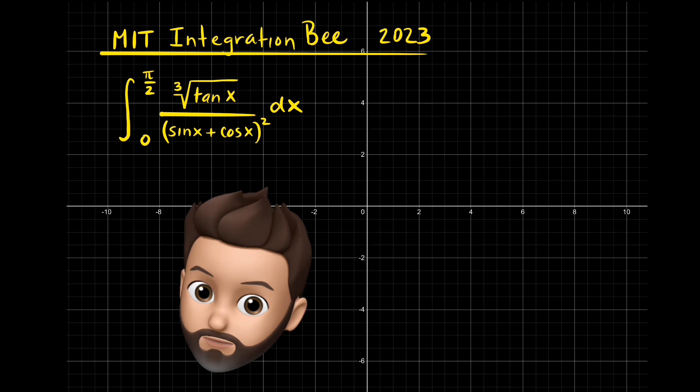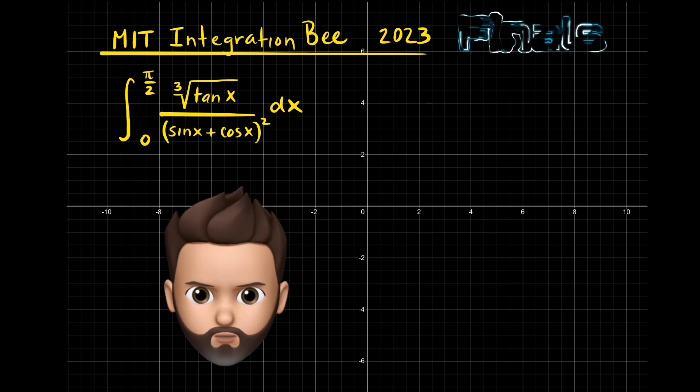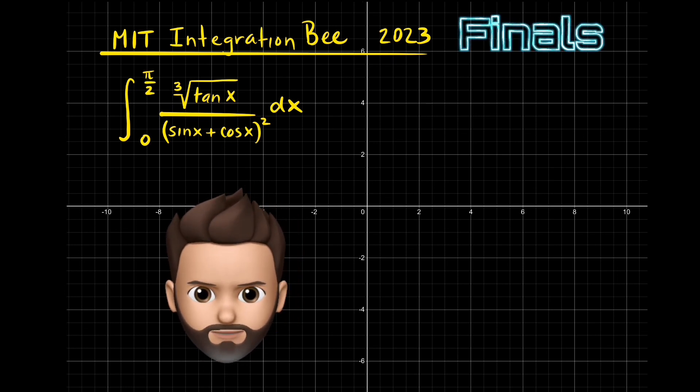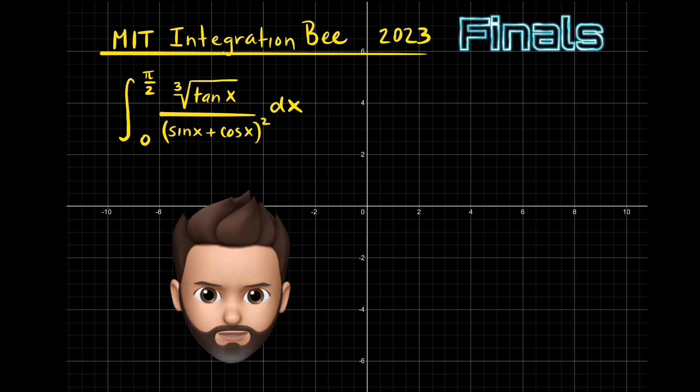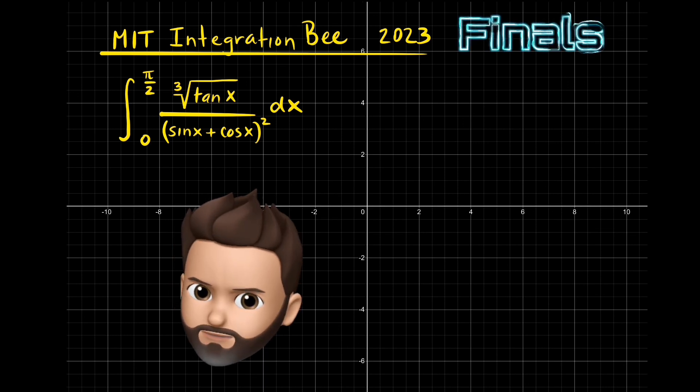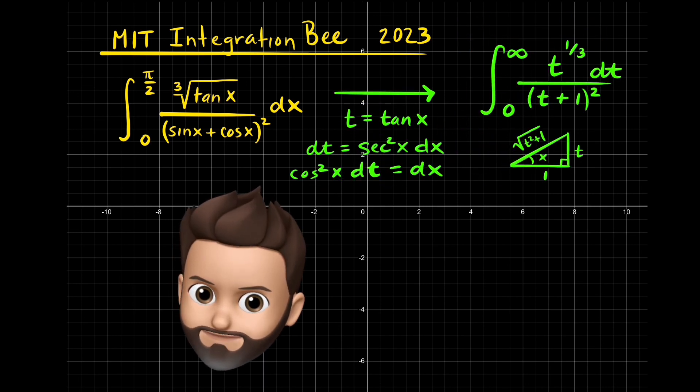This is the integral from 0 to pi over 2 of the cube root of tangent, all divided by sin x plus cos x squared. Can you solve it?